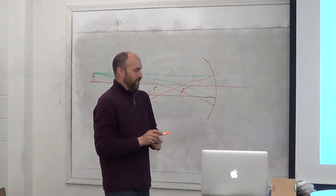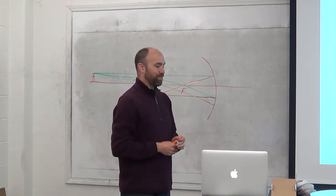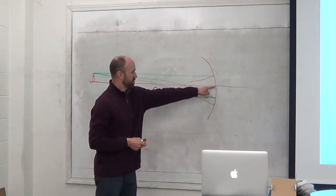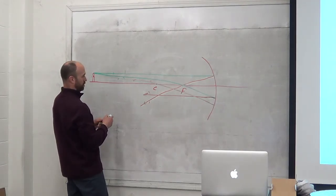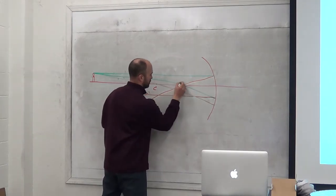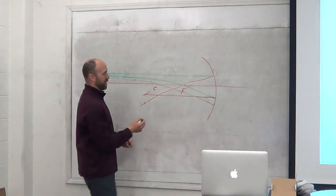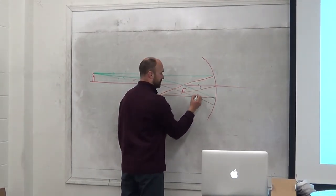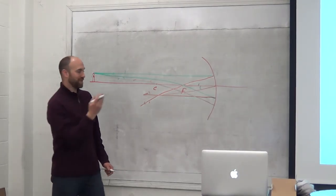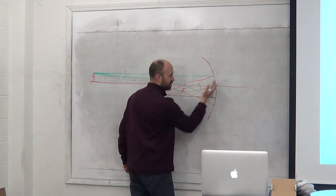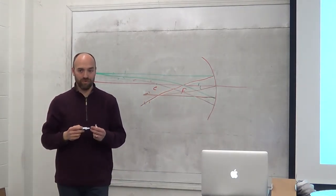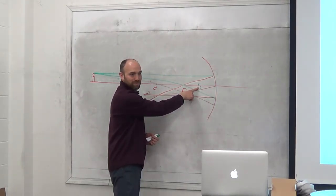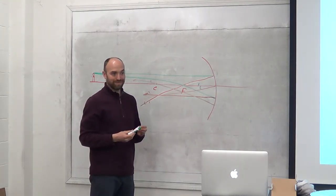Line number four: to the optical-axis/mirror intersection. This line goes to where the optical axis meets the mirror, and it's going to bounce back out such that this angle and this angle have to be the same — because at this point our mirror goes straight up and down, and you just apply the law of reflection. To make the angles match, you have to use your protractor and maximize your precision.